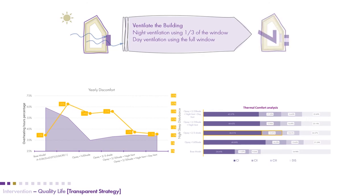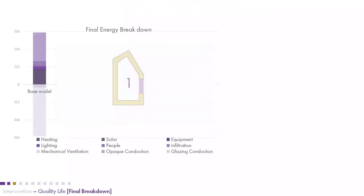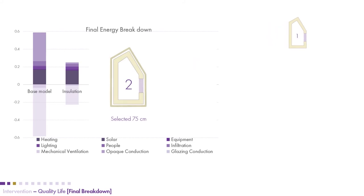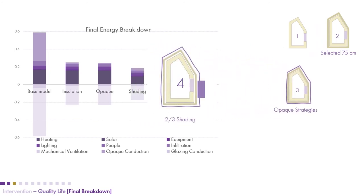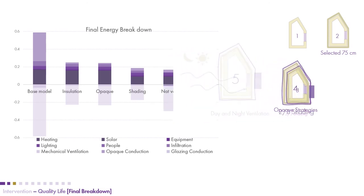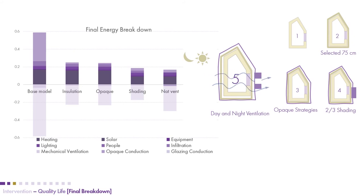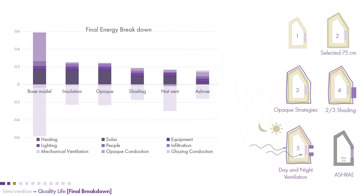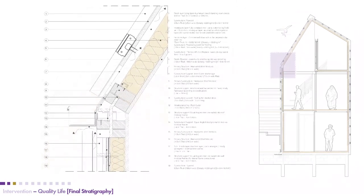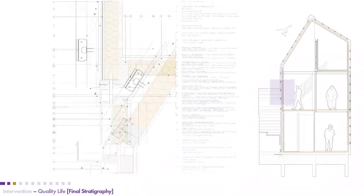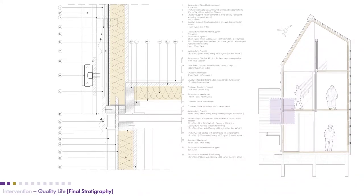The final energy breakdown shows the sequence of improvements: first, insulating the building reduced heat gains through the opaque facade; second, extra opaque adjustments; third, shading reduced gains through the windows; and finally, natural ventilation was added. We can see how close we have gotten to the ASHRAE standard that was recommended from the beginning. These simulations and analyses helped us finalize the construction layers of the different parts of the building.